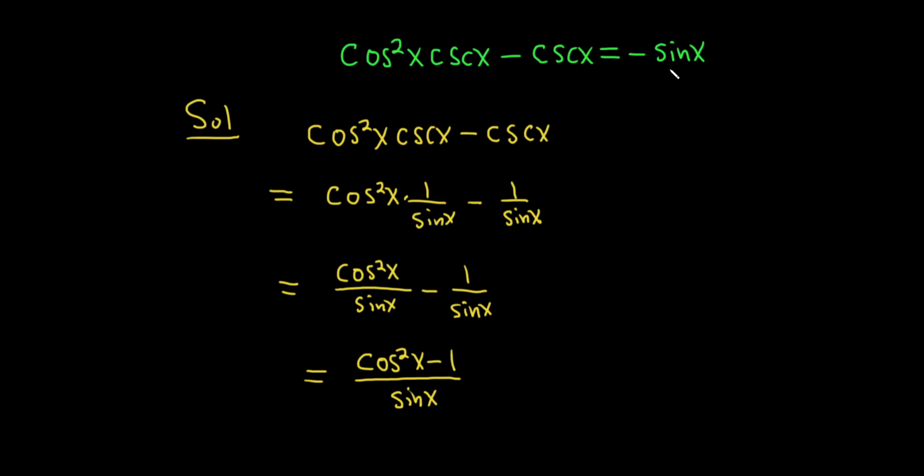And we're trying to get to negative sine x. So if you can't do it in your head, that's okay. The most important thing is that you know what identity to use next. So there is an identity that relates sine and cosine squared.